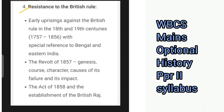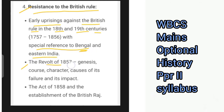Another section is based on resistance to British rule, which includes early uprisings against the British in the 18th and 19th centuries with special reference to Bengal and Eastern India. Then the revolt of 1857 — its genesis, course, character, causes of its failure and its impact — and the Act of 1858 and the establishment of the British Raj.